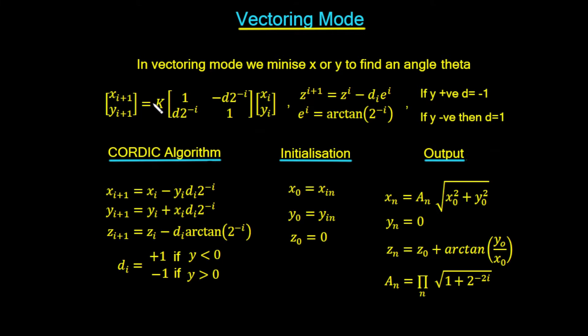Note that here we don't have any mention of k — we're just leaving k out and accepting this as the CORDIC algorithm. The final value that we get out will be scaled.